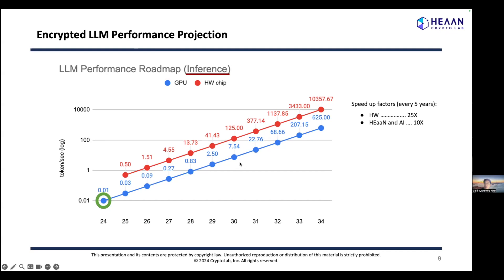Furthermore, if hardware chips optimized for homomorphic encryption start being produced next year, we believe our expected timeline should be accelerated significantly, as shown by the red line in the projection.